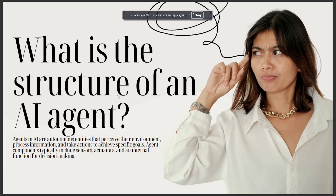What is the structure of an AI agent? Agents in AI are autonomous entities that receive their environment, process information, and take actions to achieve specific goals.